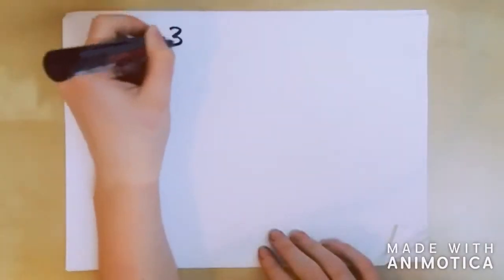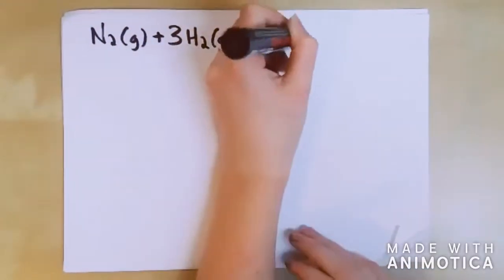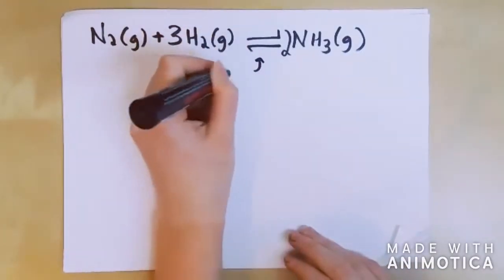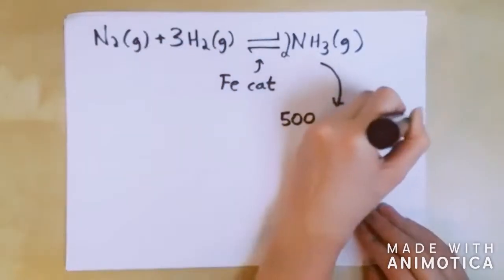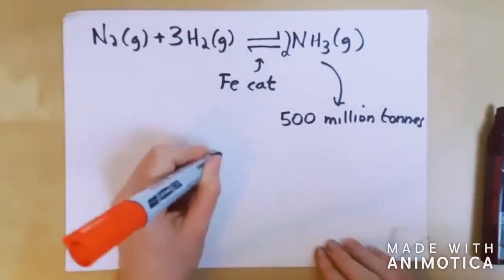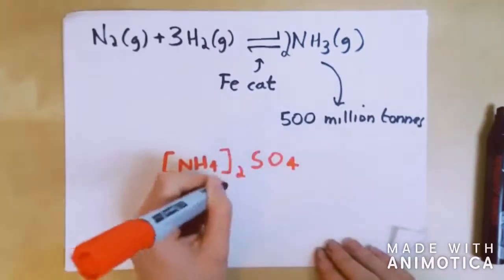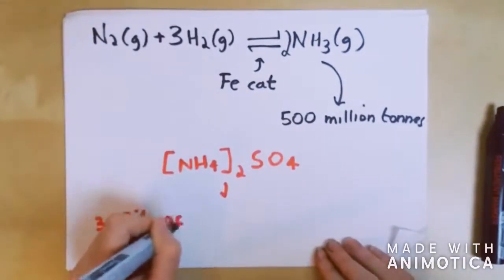The Haber process is used industrially to fix atmospheric nitrogen to produce 500 million tonnes of ammonia each year using an iron catalyst. Most of the ammonia is converted into ammonium sulphate for fertilizers, which helps to feed about 40% of the world's population.